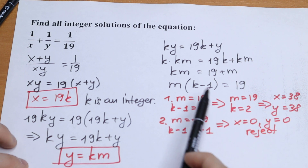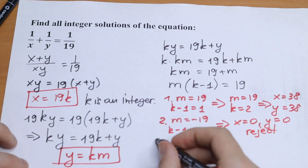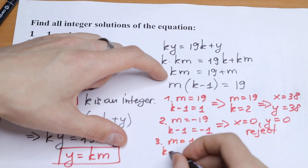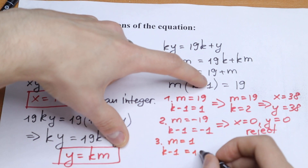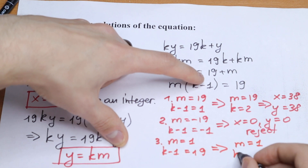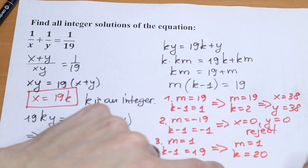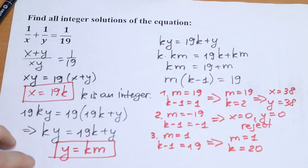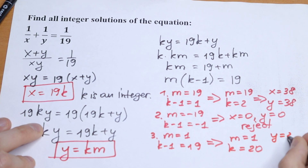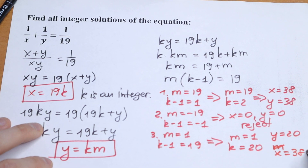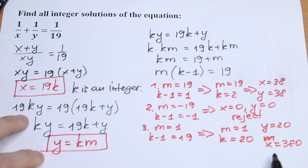The third case is the reverse: m equal to 1 and k minus 1 equal to 19, giving k equal to 20. Plugging in, y equal to km equal to 1 times 20 equal to 20, and x equal to 19 times k equal to 19 times 20 equal to 380. So our third pair of solutions is (380, 20).